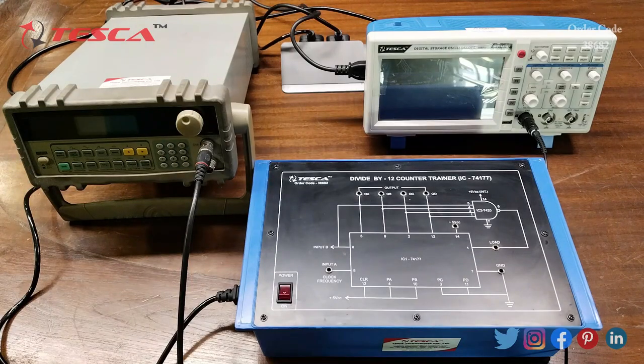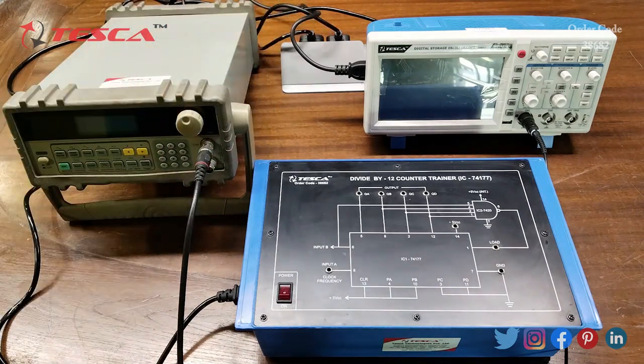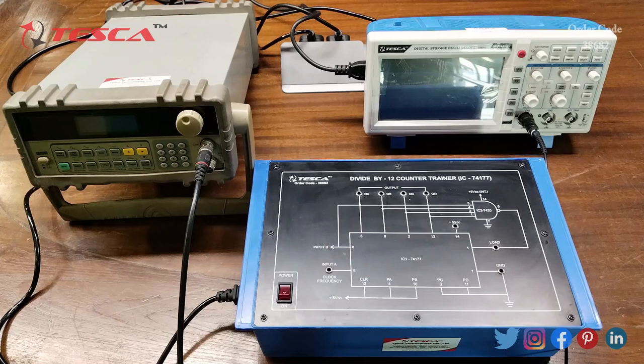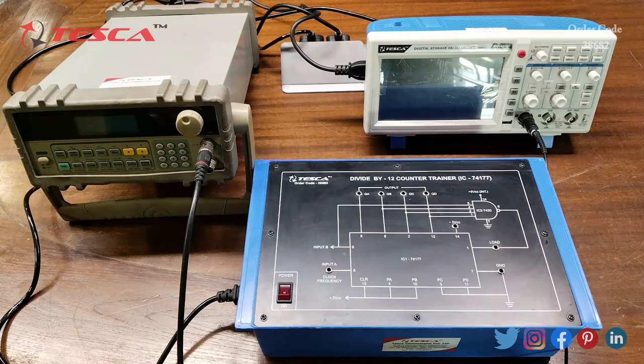Now let's see how this kit works. Here we are using a function generator and a DSO. We are going to perform an experiment to measure clock frequency using divide by 12 counter. First we have to do the connections.